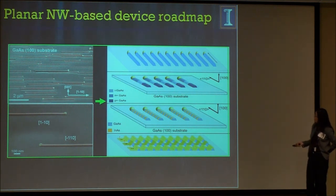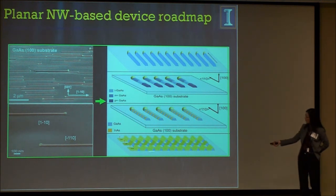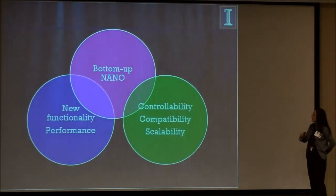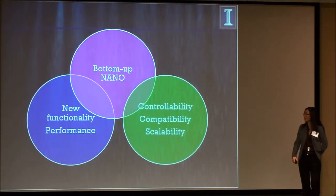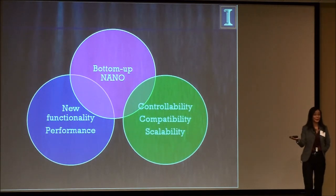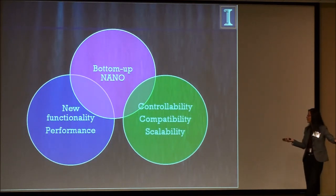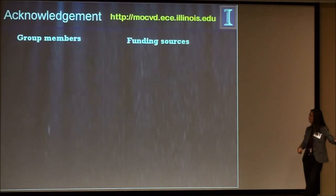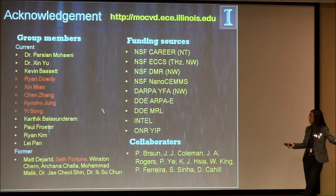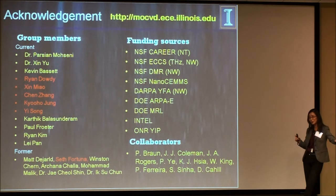Going back to the roadmap: we need to prove functionality, then prove compatibility, scalability, and controllability with existing technology. This type of nano-based structure can be enabling technology that is inserted into whatever is working right now, without having to completely change the industry — which is really hard. So it could be a rosy future. I need to acknowledge my students — those highlighted in red are the nanowire electronics people, some sitting in the audience today — and the funding agencies.